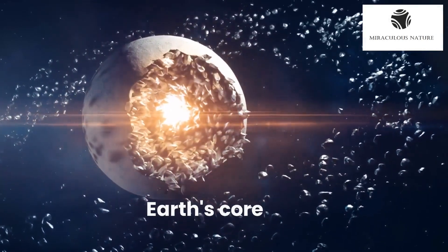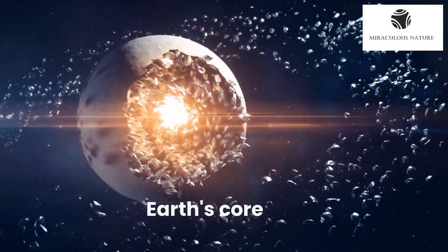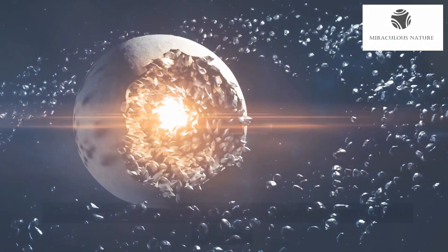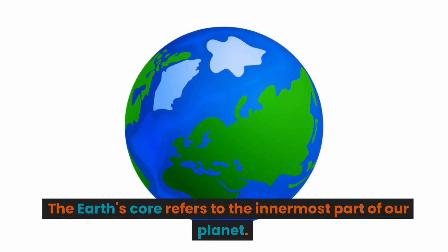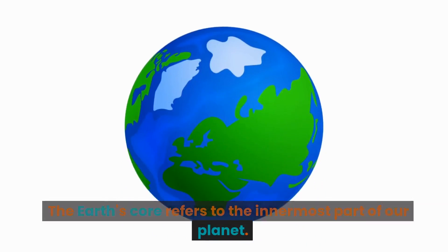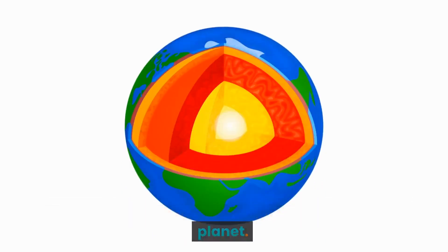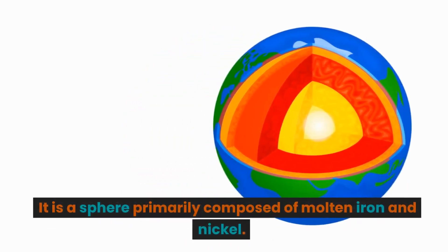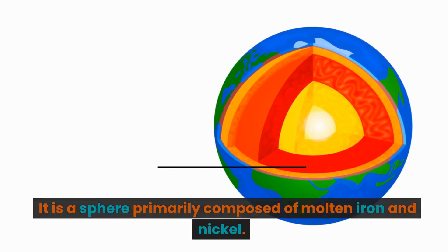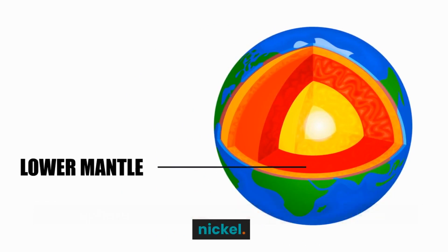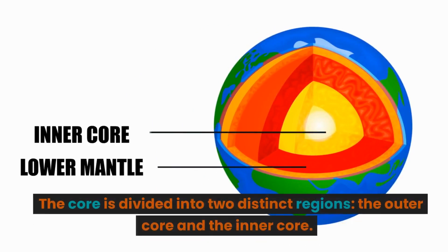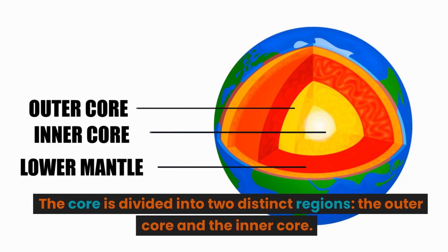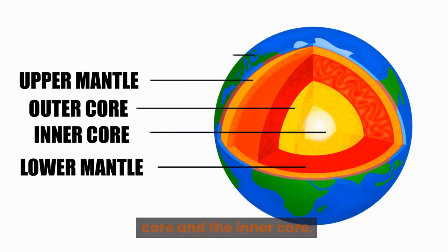Earth's core. The Earth's core refers to the innermost part of our planet. It is a sphere primarily composed of molten iron and nickel. The core is divided into two distinct regions: the outer core and the inner core.